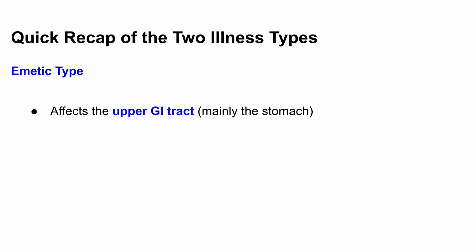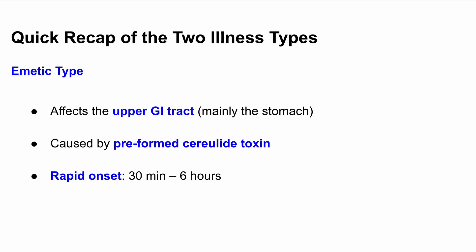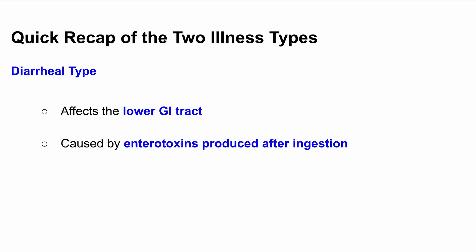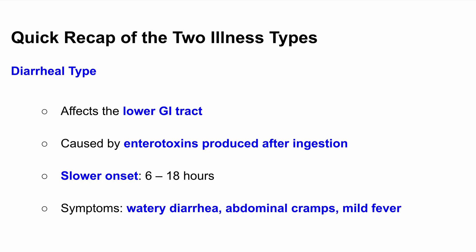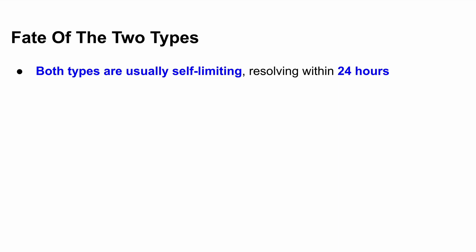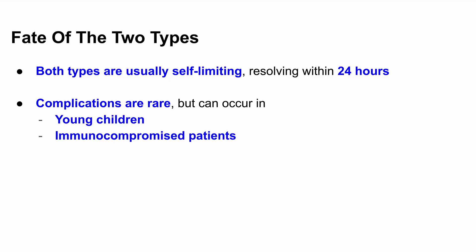To recap the differences: the emetic type affects the upper GI tract, mainly the stomach, and is caused by preformed cerelide toxin. Symptoms appear within 30 minutes to 6 hours and include nausea and vomiting. The diarrheal type affects the lower GI tract and is caused by enterotoxins produced after ingestion. Symptoms take 6 to 18 hours to appear and include watery diarrhea, abdominal cramps, and sometimes mild fever. Both types are usually self-limiting, resolving within 24 hours. However, in rare cases — especially in immunocompromised patients or young children — complications can occur.